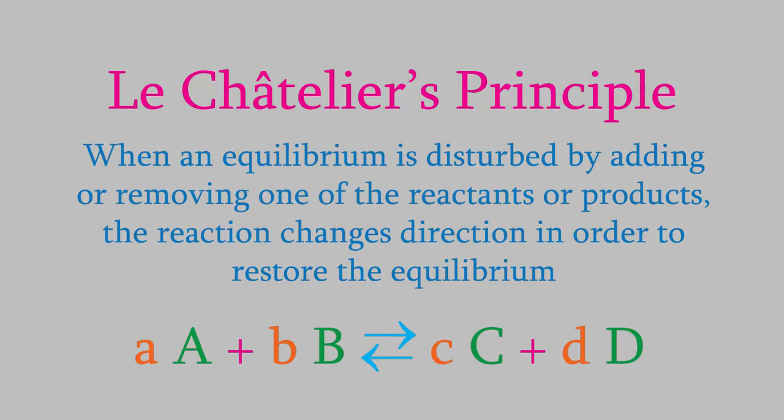This behavior of chemical reactions was discovered in 1888 by the French chemist Henri Le Chatelier, so it's called Le Chatelier's Principle. It states that when an equilibrium is disturbed by adding or removing one of the compounds, the direction of the reaction shifts so that eventually the equilibrium is restored.